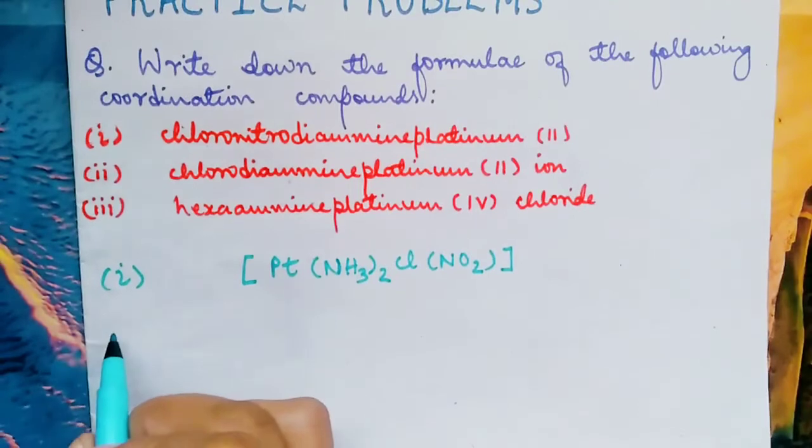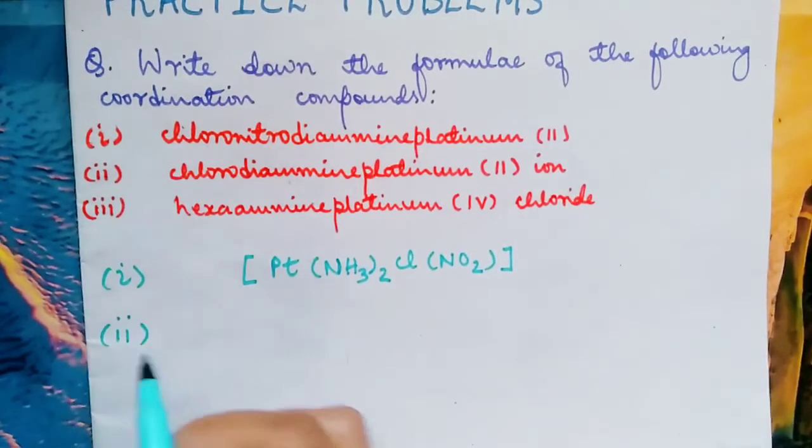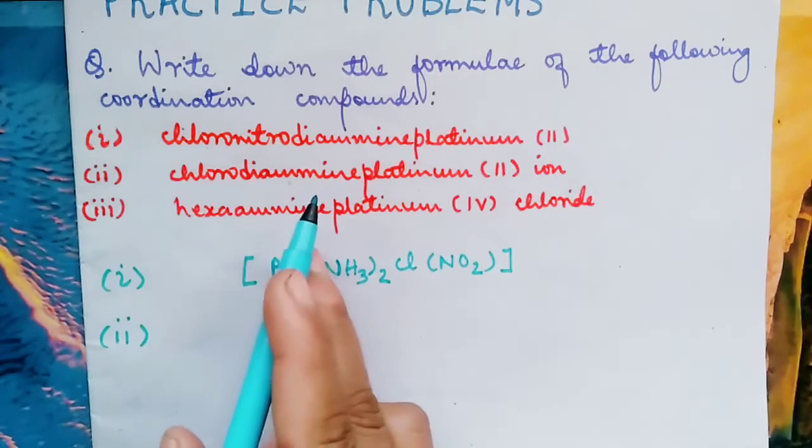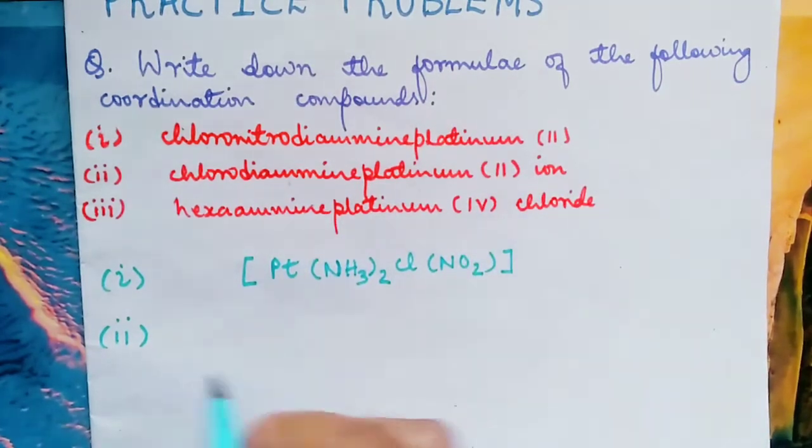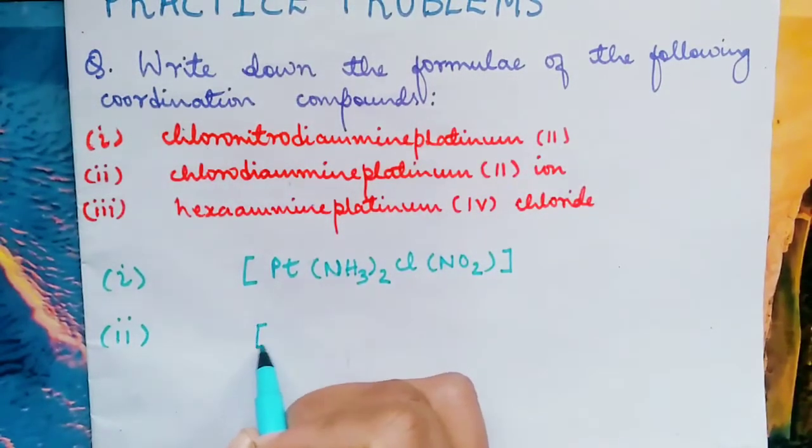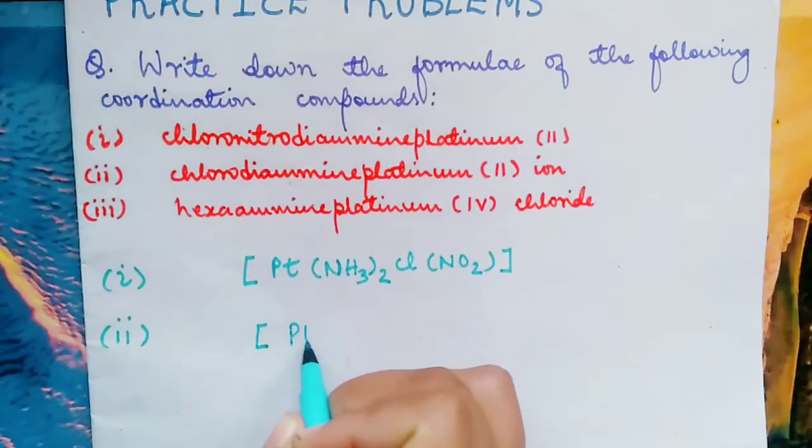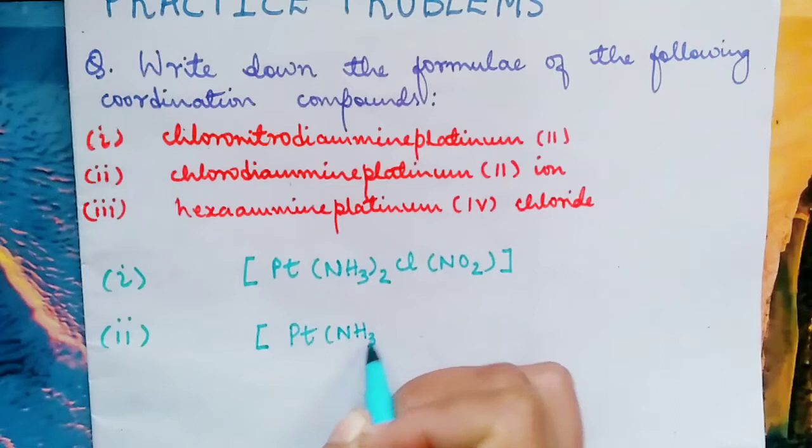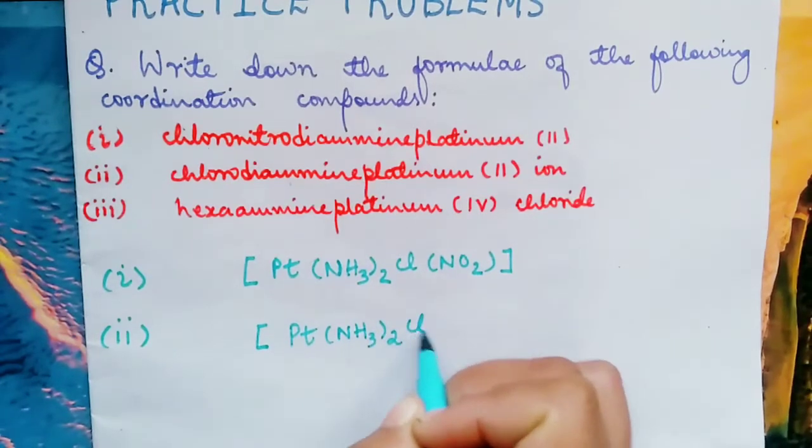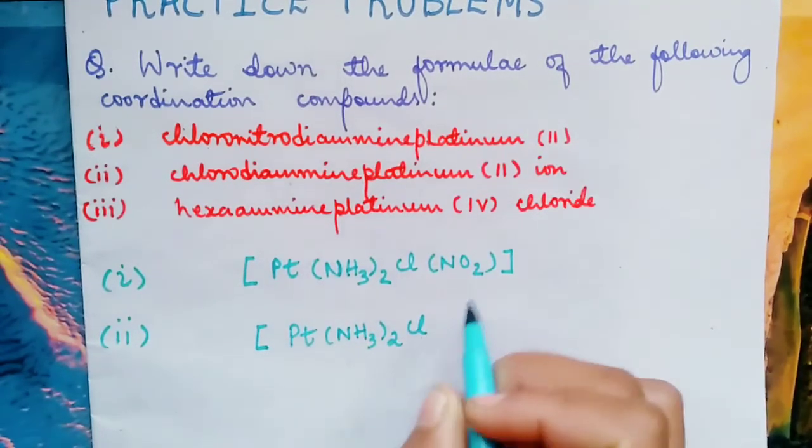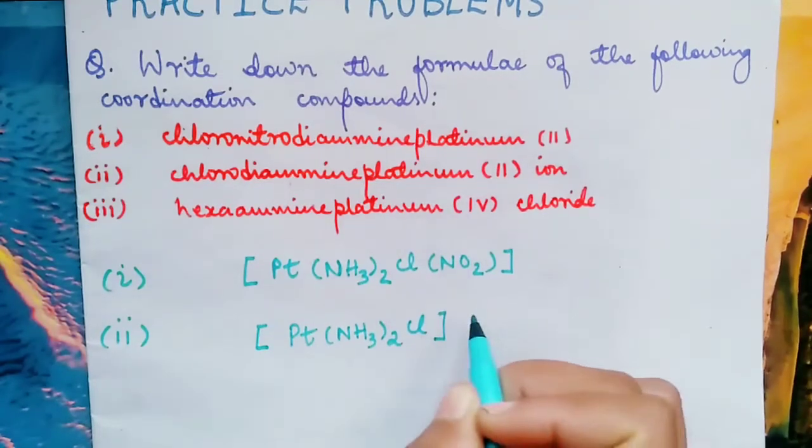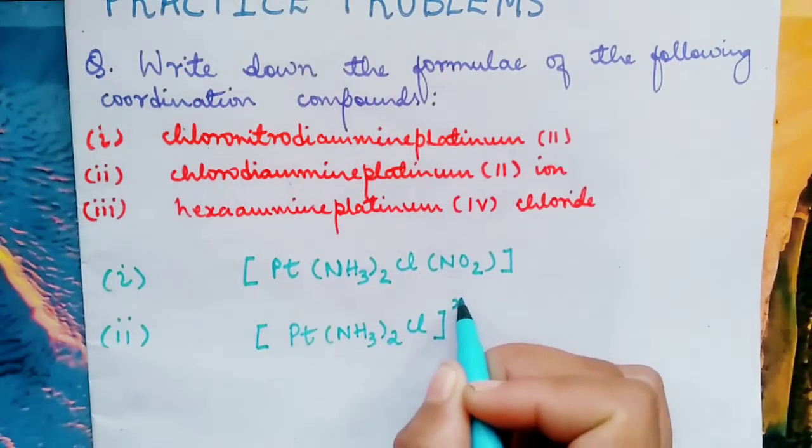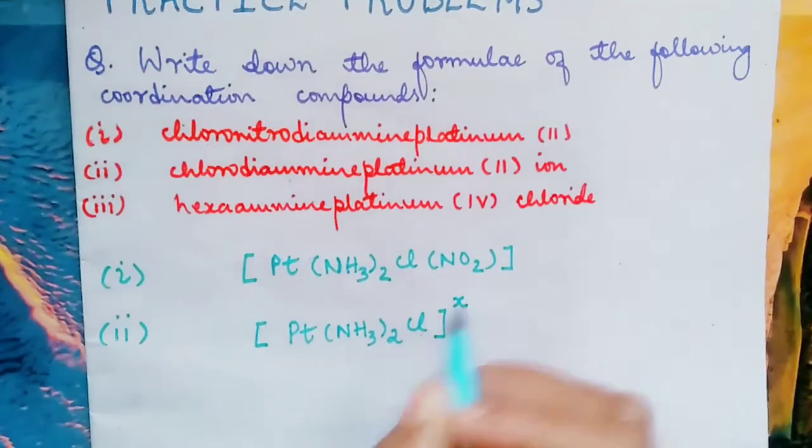Now we come to this one: chlorodiamineplatinum(II) ion. The same way, the central metal atom is platinum, and then diamine, chloro. Diamine, chloro, platinum(II) ion. Let that be X. We want to find X.